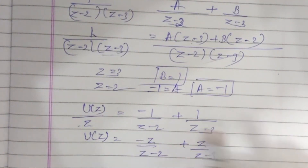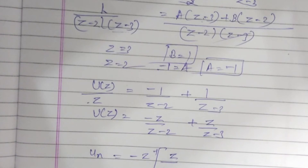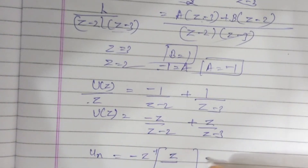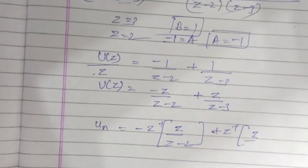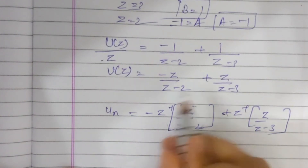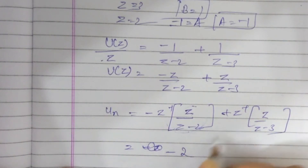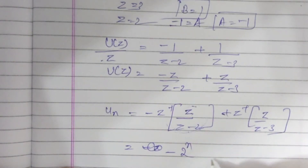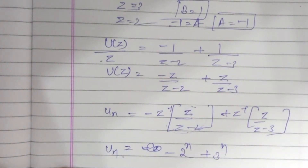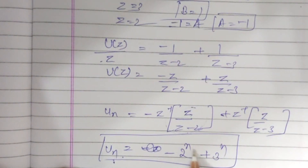Applying the inverse Z-transform on both sides: small u(n) equals minus Z-inverse of Z divided by (Z minus 2) plus Z-inverse of Z divided by (Z minus 3). Using the standard form, Z-inverse of Z over (Z minus a) equals a^n, so u(n) equals minus 2^n plus 3^n.